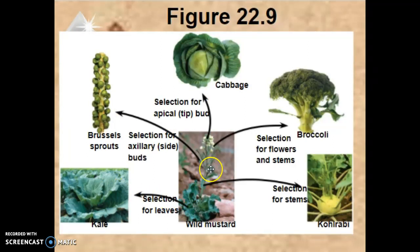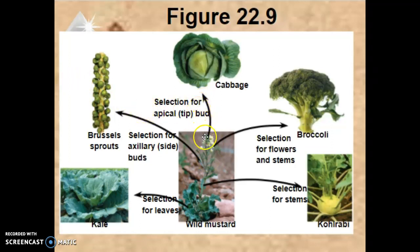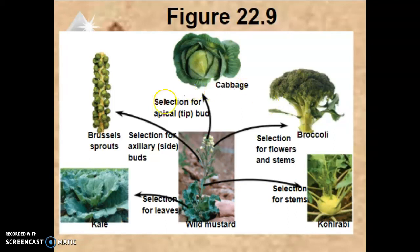These all have the same parent organism: wild mustard. If we select for leaves we get kale; if we select for side buds we get brussel sprouts; if we artificially select for the apical meristem — the very tip — we get cabbage; if we select for flowers and stems we get broccoli; and if we select just for stems we get kohlrabi. So we artificially changed one species into five.